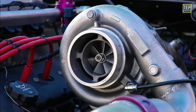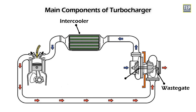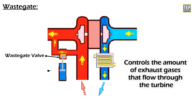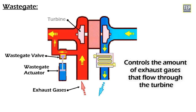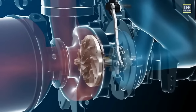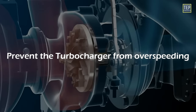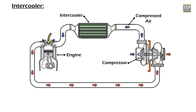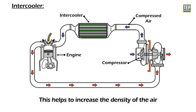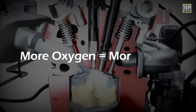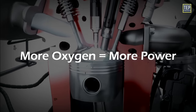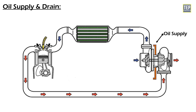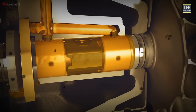Other main components of a turbocharger include a wastegate, intercooler, bearing system, and oil supply. The wastegate is a valve that controls the amount of exhaust gases that flow through the turbine; it is used to regulate boost pressure and prevent the turbocharger from over-speeding. An intercooler is used to cool the compressed air coming from the compressor before it enters the engine, which increases the density of the air, resulting in more oxygen available for combustion and more power.